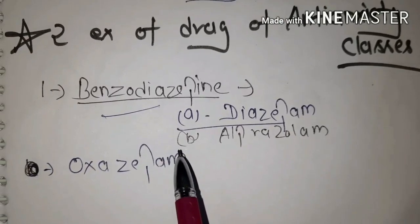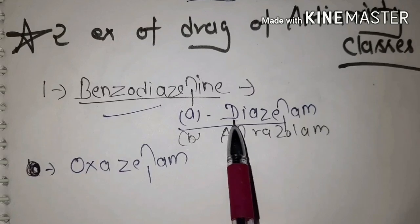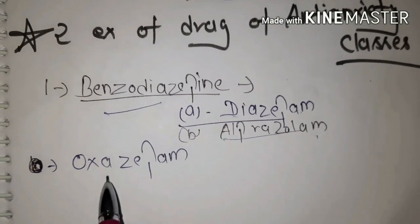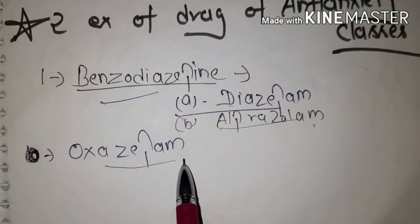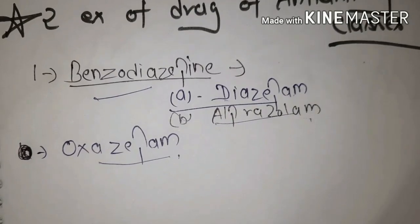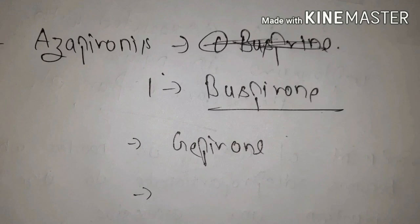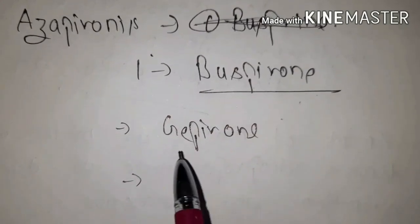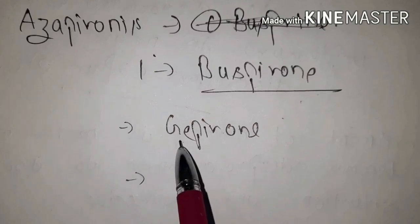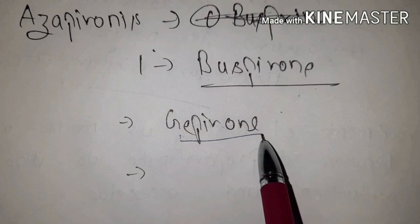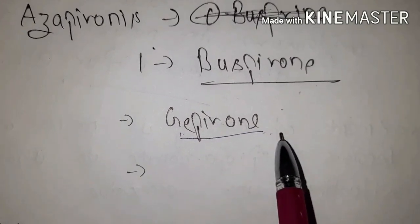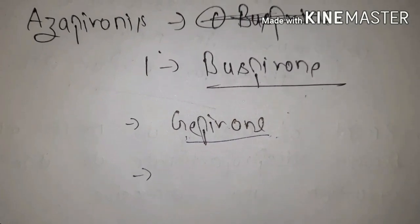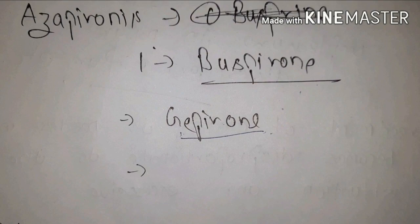The first drug class is benzodiazepines — these are examples of anti-anxiety drug classes commonly used. The second class is azapyrones, with examples including buspirone and related drugs. There are many drugs in these classes but the most important ones will be mentioned. A clip will be added so you can take a screenshot and make handmade notes.